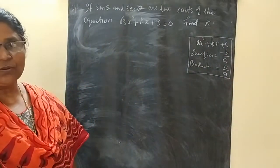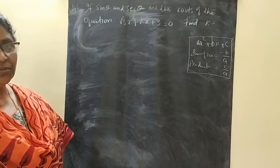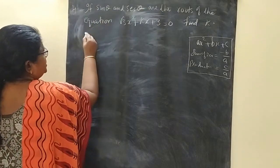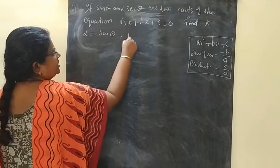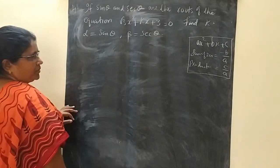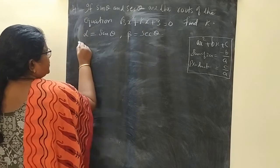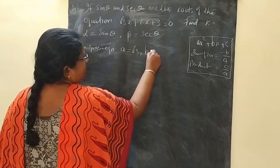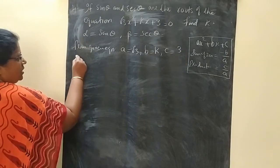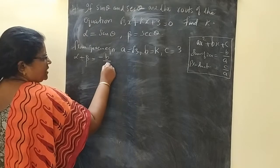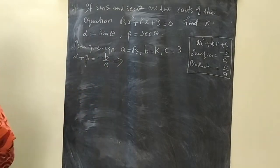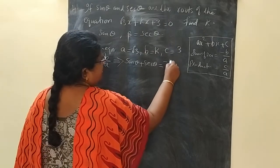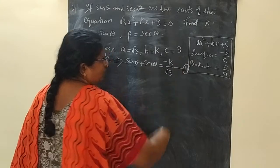Once again: sum of zeros = -b/a and product of zeros = c/a. The zeros given are sin θ and sec θ, so let α = sin θ and β = sec θ. From the given equation, a = √3, b = k, and c = 3. So α + β = -b/a gives us sin θ + sec θ = -k/√3. This is equation 1.